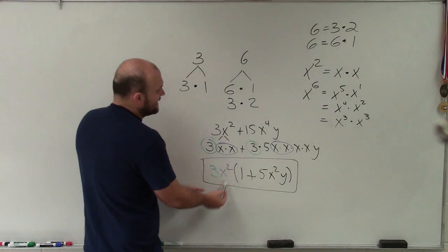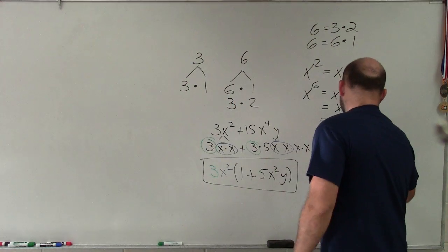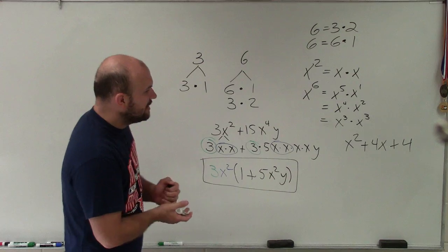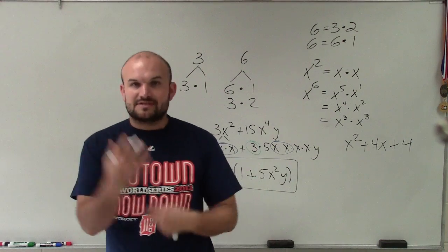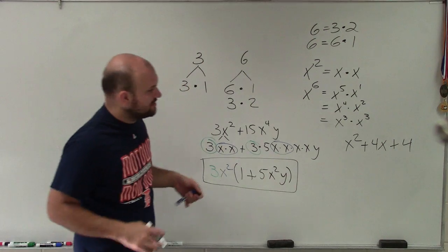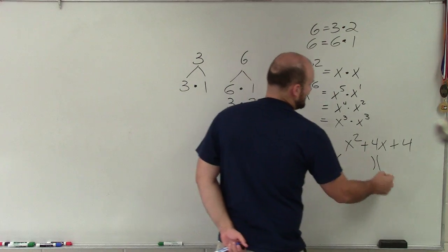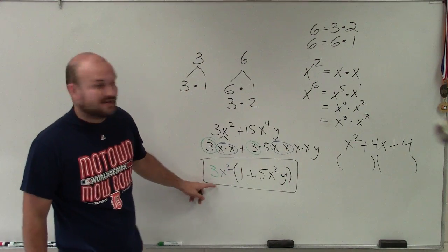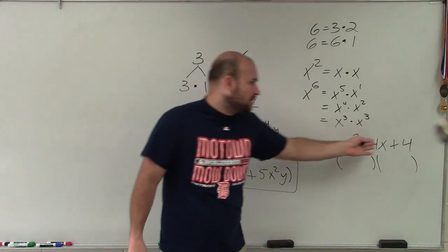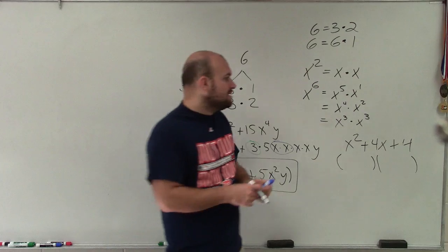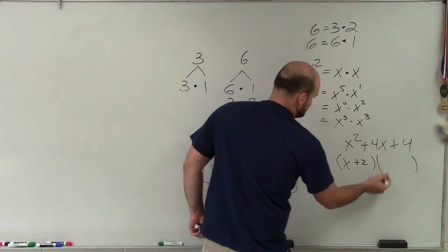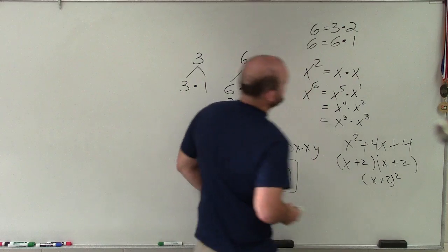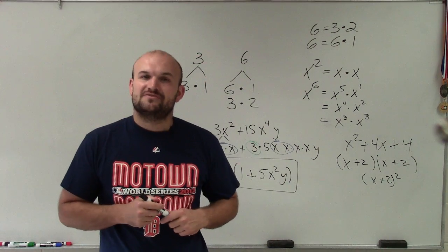The last example: x² + 4x + 4. In this case none of the terms share the same common elements, so you can't factor out a greatest common factor — they don't all share a variable x or a number. There's a specialized way to factor trinomials, but the key idea is to write it as a product of its factors. In this case it factors as (x + 2)(x + 2), which I can rewrite as (x + 2)². And that, ladies and gentlemen, is the basic idea of what factoring is.